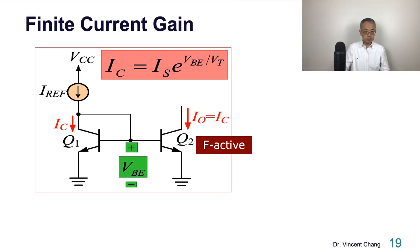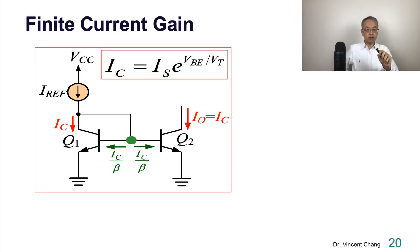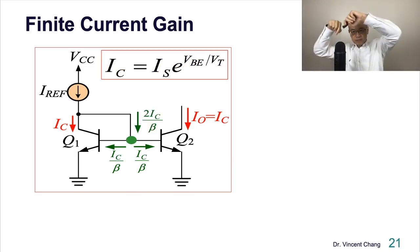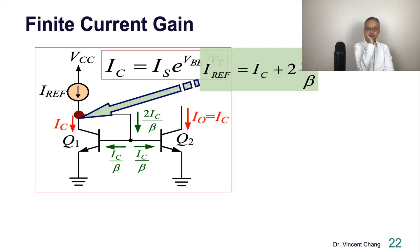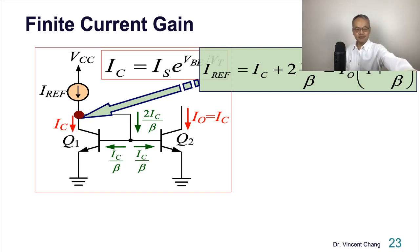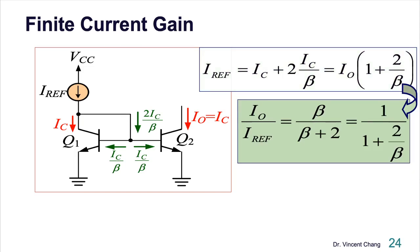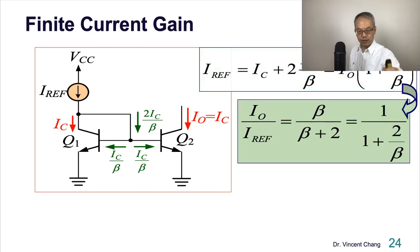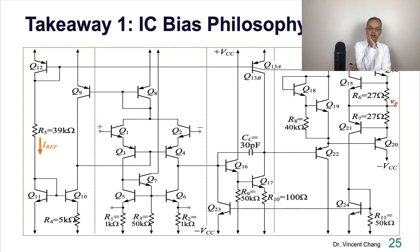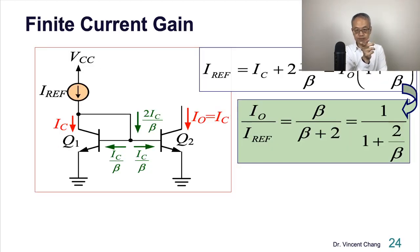Same IC, yet, base current, they have the base current, IC over beta, and then two IC over beta. Reference current is going to be the sum of these two. Therefore, IC equals IO, IO equals IC. So IO, you can get the relationship between IO and I reference. It's this one. Beta represents the finite current gain. That's the result. Takeaway.